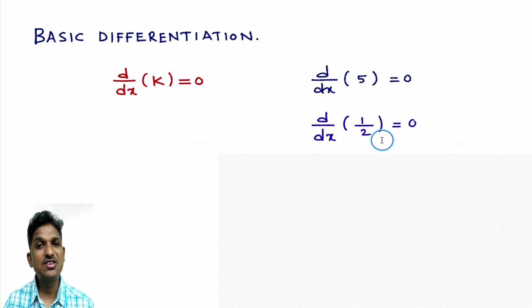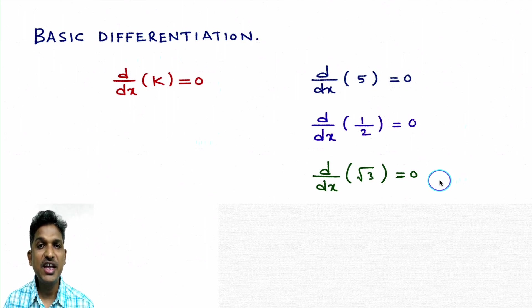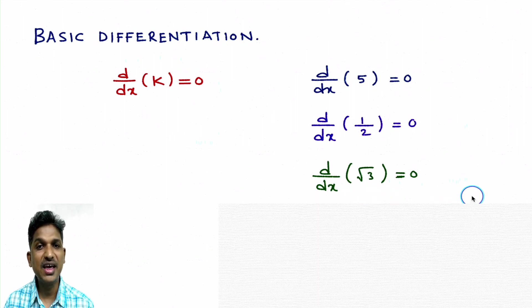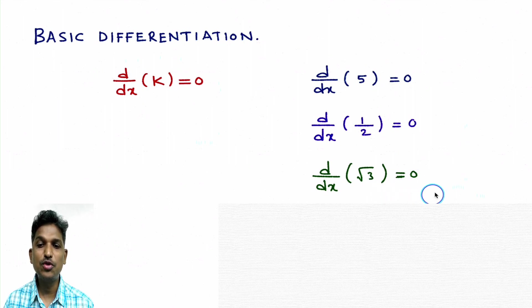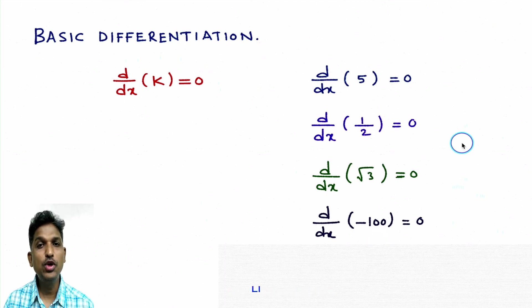Some students will write d/dx of 1/2 equal to 0. Instead of that, simply say: derivative of 1/2 — that means derivative of a constant is 0. Also make a habit of saying 'derivative of root 3' rather than 'd/dx of root 3.' While doing differentiation, we will use this formula in this way.